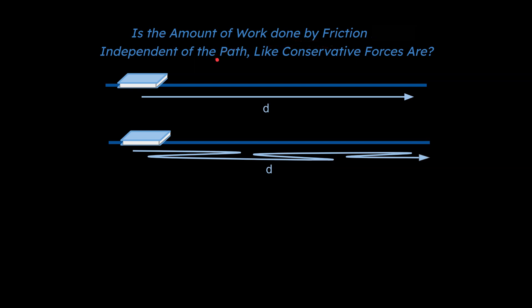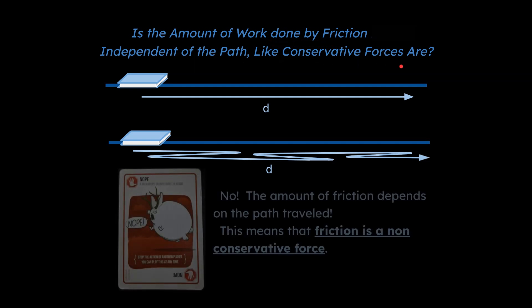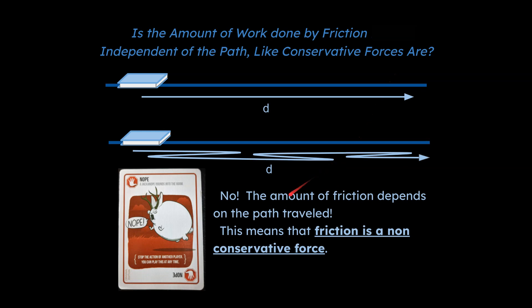And so to answer the question, is the amount of work done by friction independent of the path like conservative forces are? The answer is no, it's not independent of the path. In fact, friction depends on the path traveled. So friction is a non-conservative force. This is really crucial.